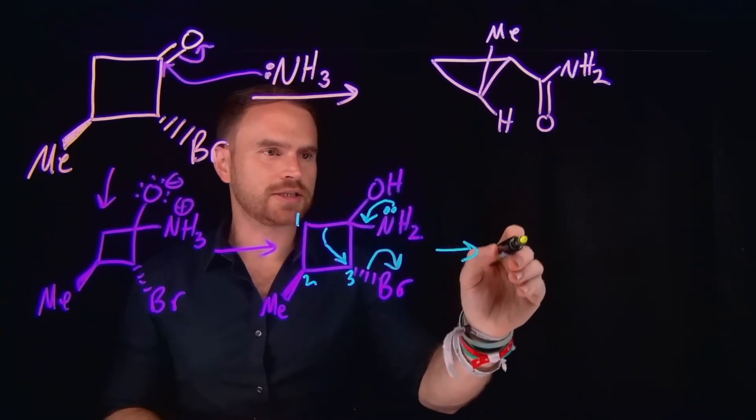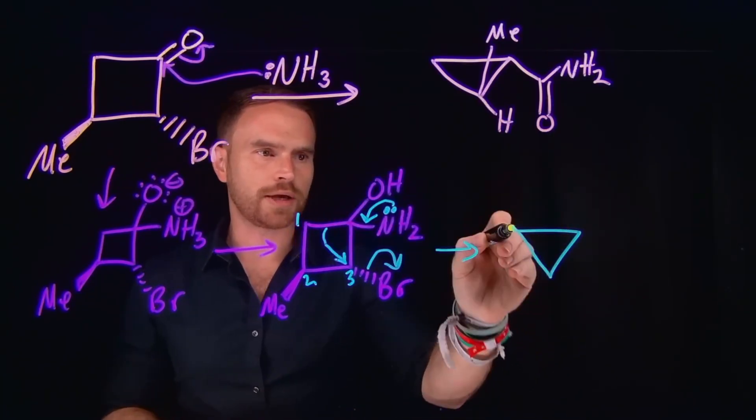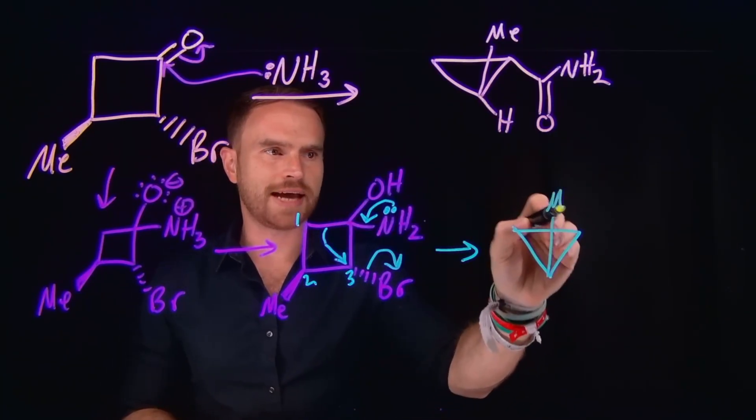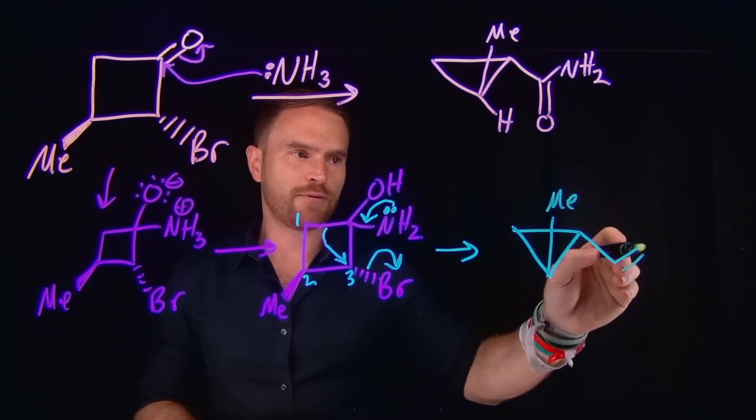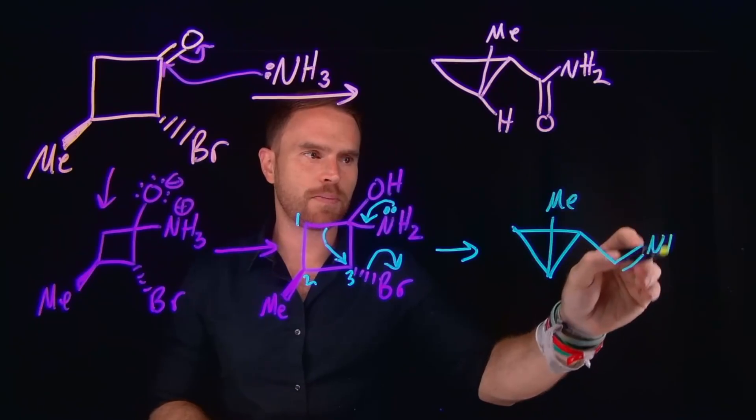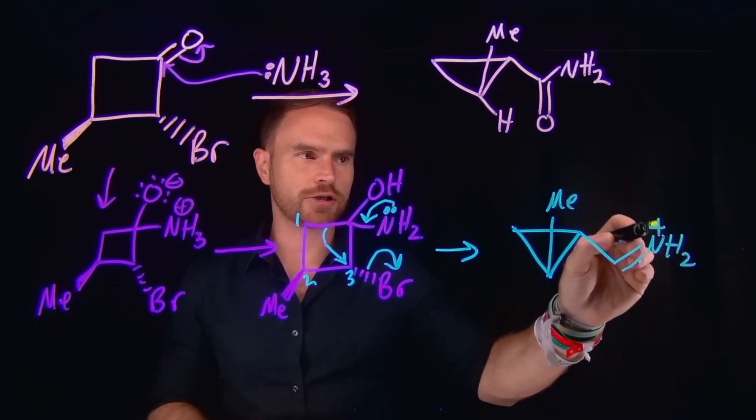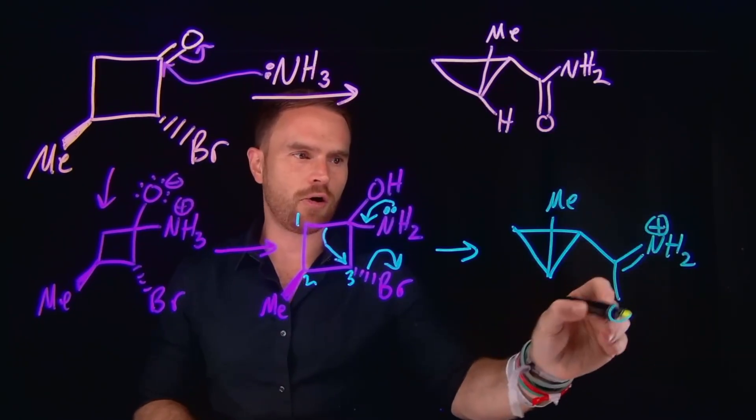So then the product of this reaction is going to now be a three-membered ring where you still have the methyl group attached to it. And on this side is where you will end up with an ammonium ion because you have now formed a new carbon to nitrogen double bond, which is going to be positively charged. And you still have this alcohol coming off of it as well.